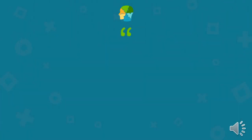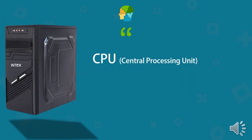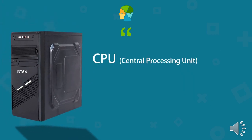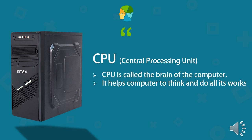Have you seen a black box attached to your computer? That black box is known as CPU, i.e. Central Processing Unit. CPU is called the brain of the computer, just as our brain controls all the different parts of the body and makes them work together. Similarly, the computer CPU controls all the other parts of the computer and makes them work together. All the parts of the computer are connected to the CPU.